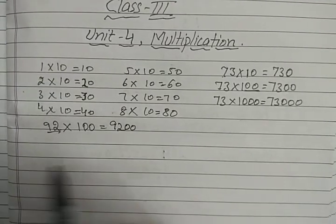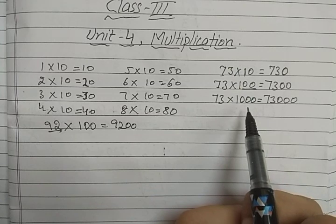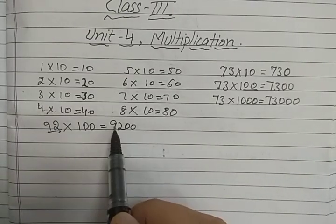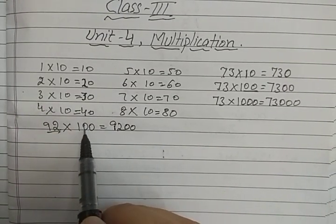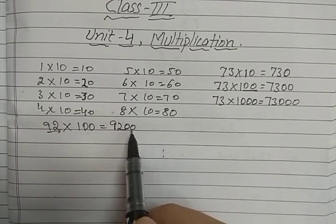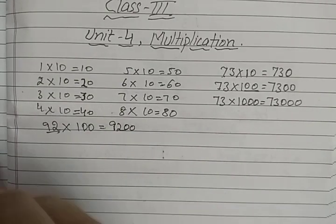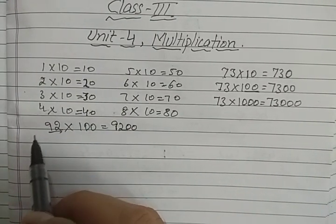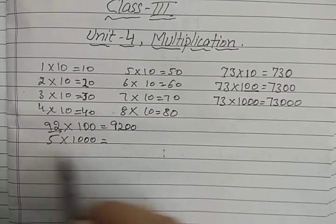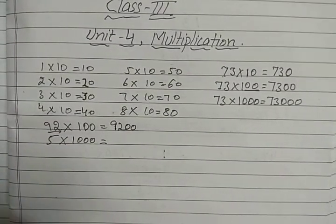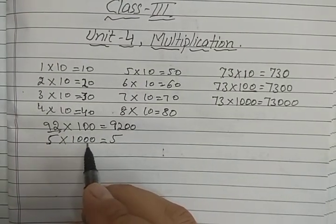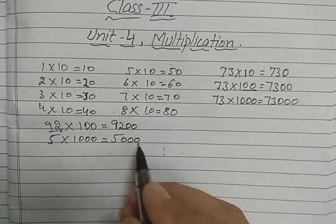This rule applies for multiplying by 10, 100, and 1000: we just write the number and then count the number of zeros. For example, 5 multiplied by 1000 — we write 5 and then how many zeros are in 1000? One, two, three — so we write three zeros on the right side.